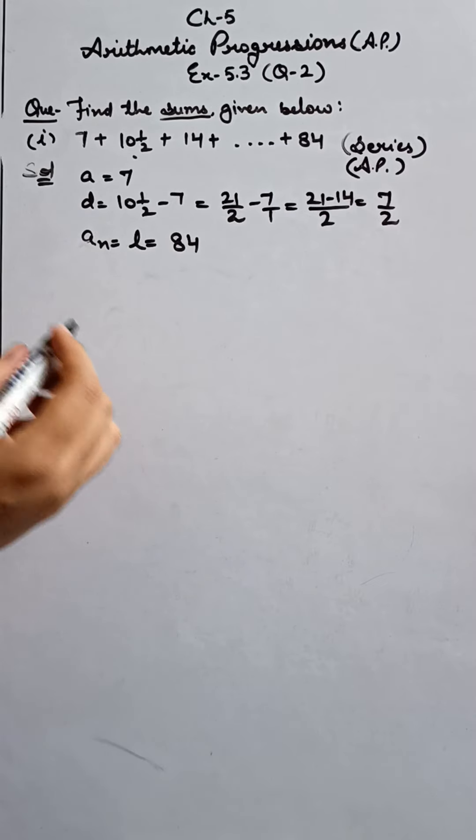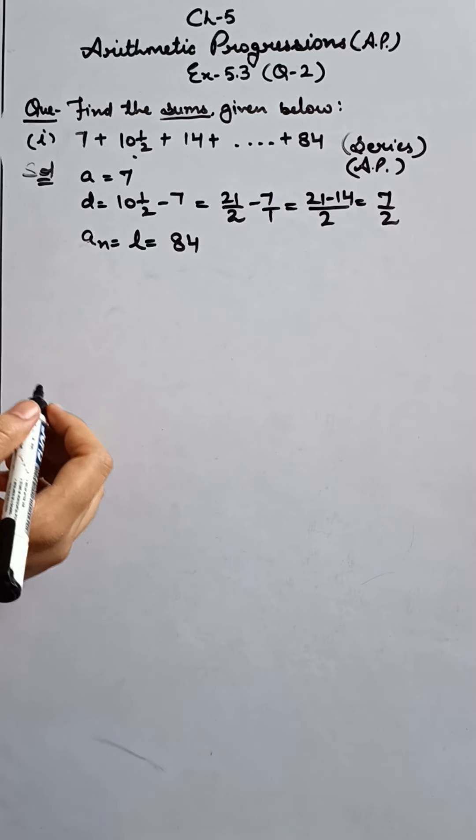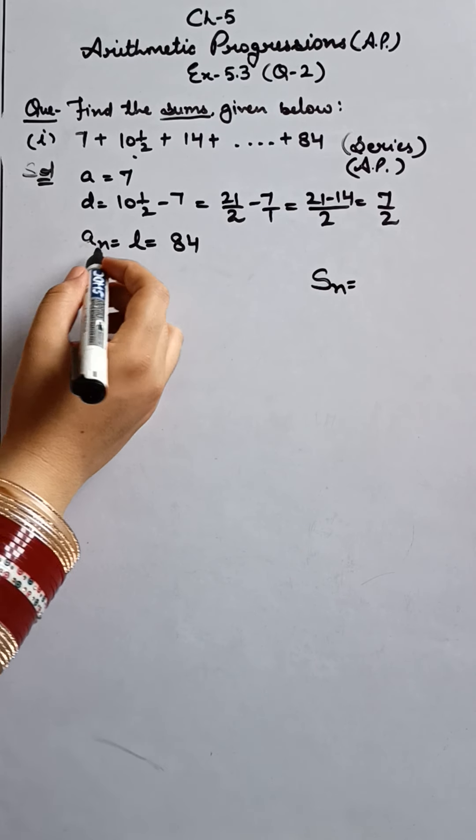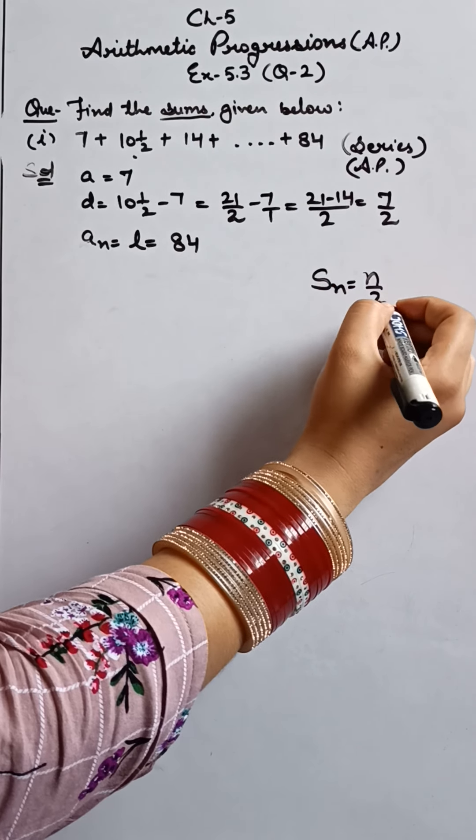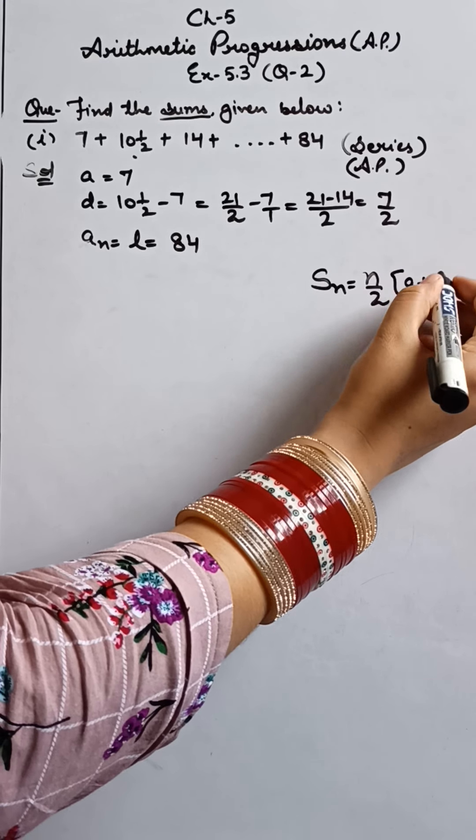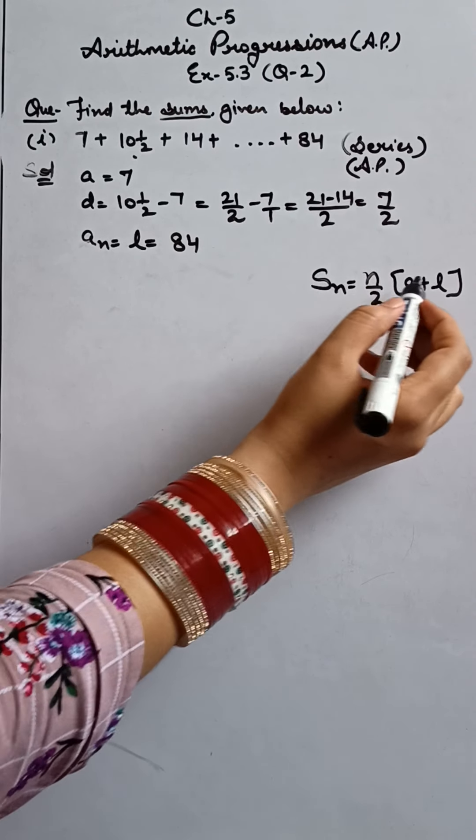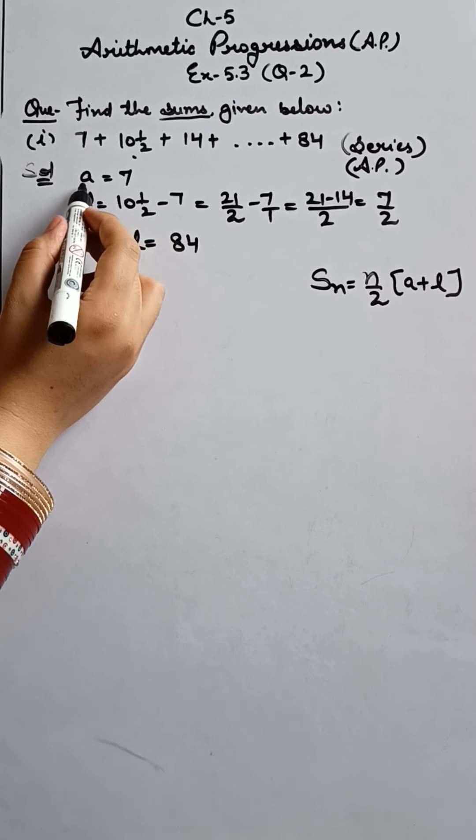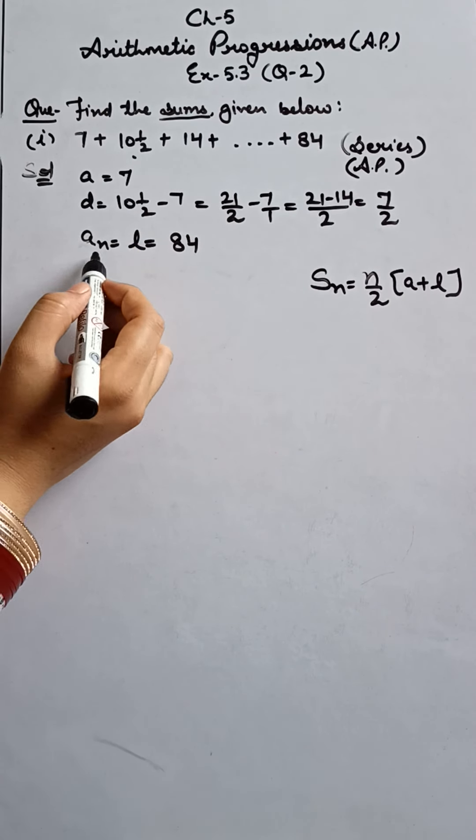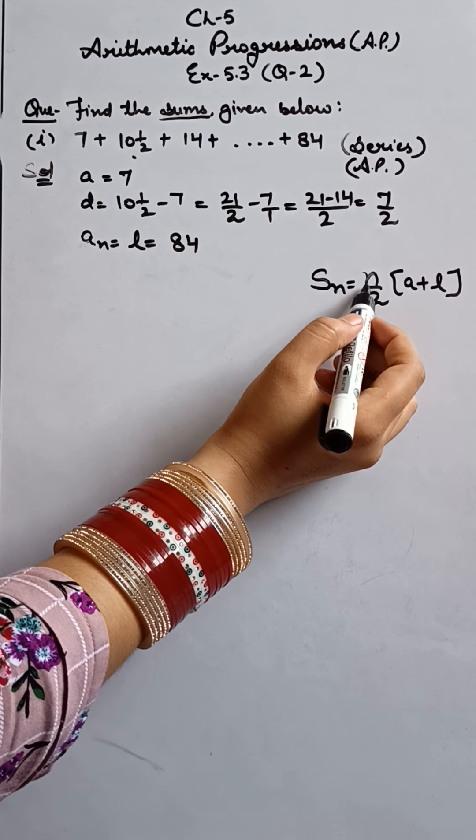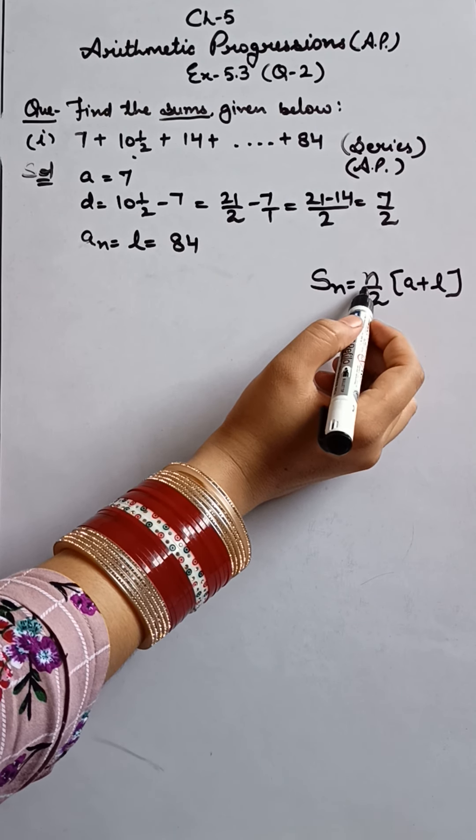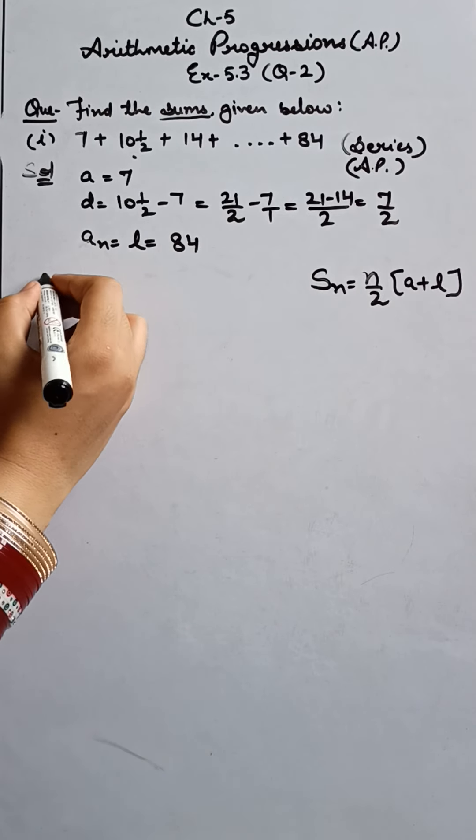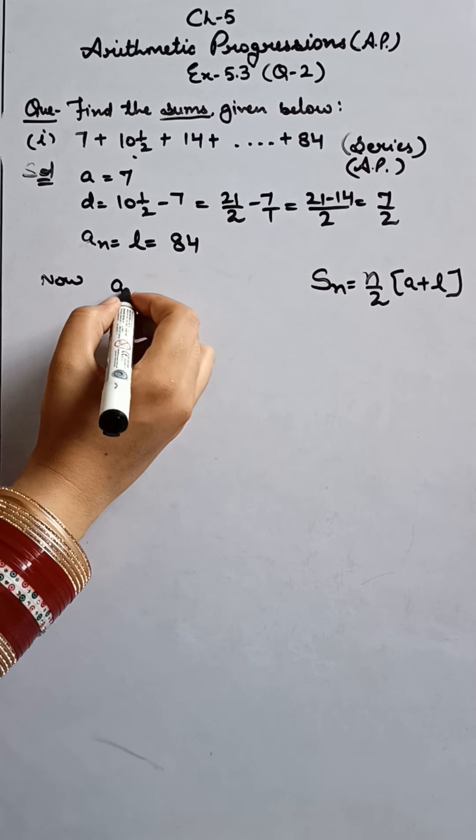So when we look at the formula for SN in mind, regarding that SN formula, what all do we need? Even if we apply the AN formula, it is N upon two into A plus L. So do we have N available? No. We have A, D, and AN. N is not available. So what will be our first step? We have to find out N. And how will we find that N?